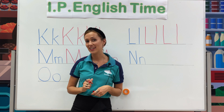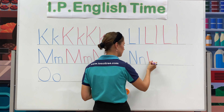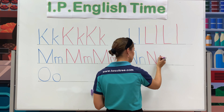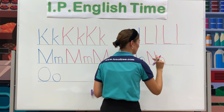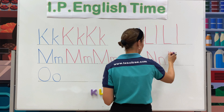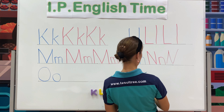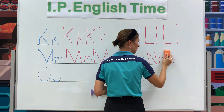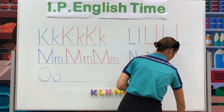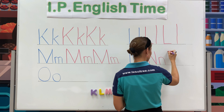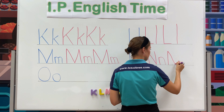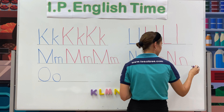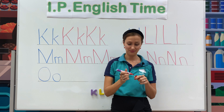Now it's time to write the letter N. Capital letter N and small letter N. Let's write two times. If it's not beautiful, I want you to erase and try again. Small letter N. Yes, it's beautiful. It's right on the line.